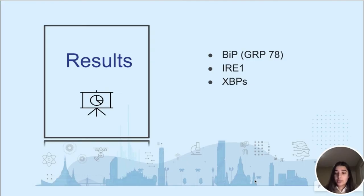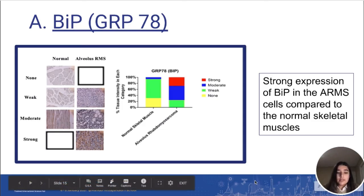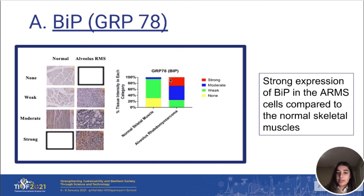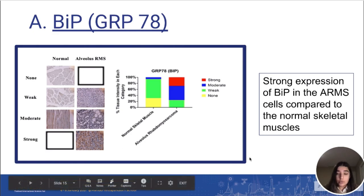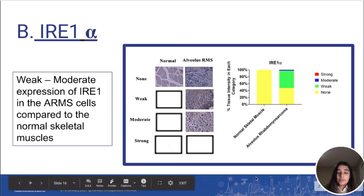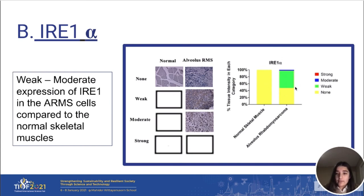Now I will walk through the specific results in detail. When we examined the correlation between BIP and ARMS, we could see that there is a significant expression of BIP in ARMS cells compared to normal skeletal muscles, the control group. As we can see through this graph, there is a moderate to strong expression of BIP in ARMS compared to the normal skeletal muscle, which shows a very weak to moderate expression. Next, we saw the correlation between IRE-1 and ARMS. Once again, we could see a moderate to weak expression of this protein in ARMS cells compared to the normal skeletal muscles of the control group, where there is no expression at all, hence showing there is a significant expression of this protein in ARMS cells alone.